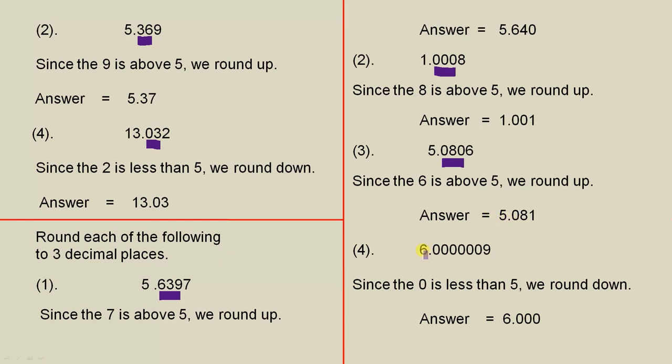And finally, we would need three decimal places here. Here they are. That's a 0, so we keep that the same. So since the 0 is less than 5, we round down, and that's the answer.